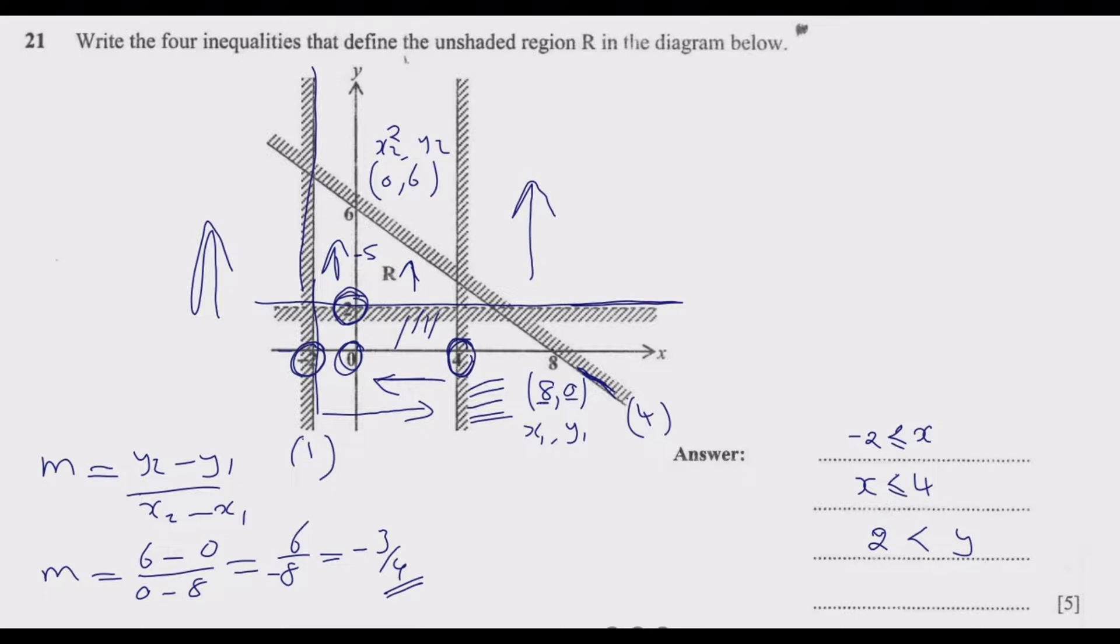Why do we need the gradient? We need it to use in this generic formula for the equation of a straight line: Y equals M times X plus C, where C is a constant and M is the gradient. We found what M is, so we have Y equals minus 3 over 4 X plus C. We need to find C.